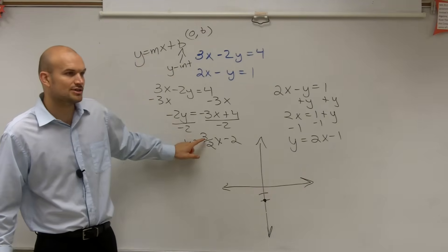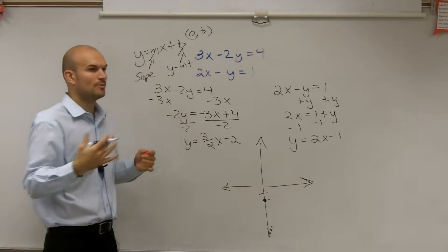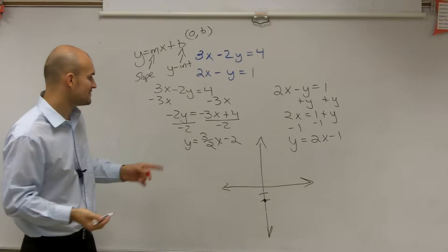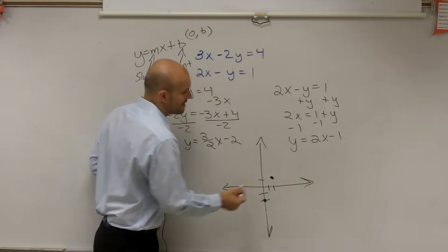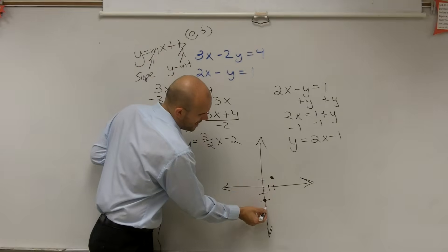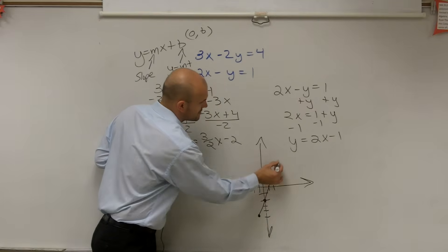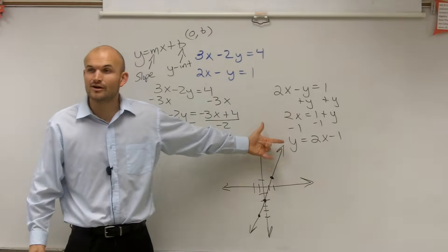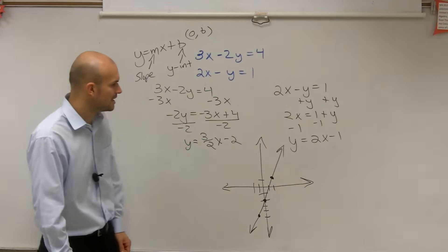Then, it says my slope is going to be 3 over 2. And remember, because m is your slope — slope we represent as rise over run, the change in your y values over the change in your x values. So, I'm going to go up 3 and over 2 to get to my next point. You could also go negative over negative, because that would still be positive. You could also go down 3 to the left 2. Then I connect my points and I have my line. Make sure, ladies and gentlemen — I've seen a lot of people graphing and not putting the arrows. When we're graphing lines, they have infinite length, so make sure you create those arrows at the ends.